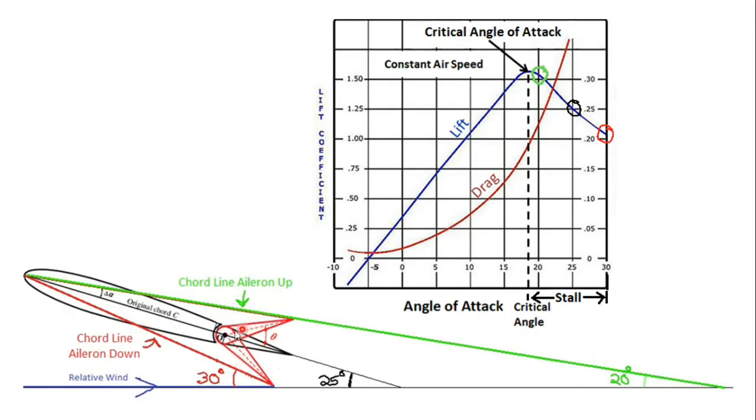You can see the example here. The original chord line with the ailerons in their central position has an angle right here of 25 degrees. If you lower the aileron, it goes up to an angle of 30 degrees. And if you raise the aileron, it goes down to an angle of 20 degrees, all with the same relative wind.